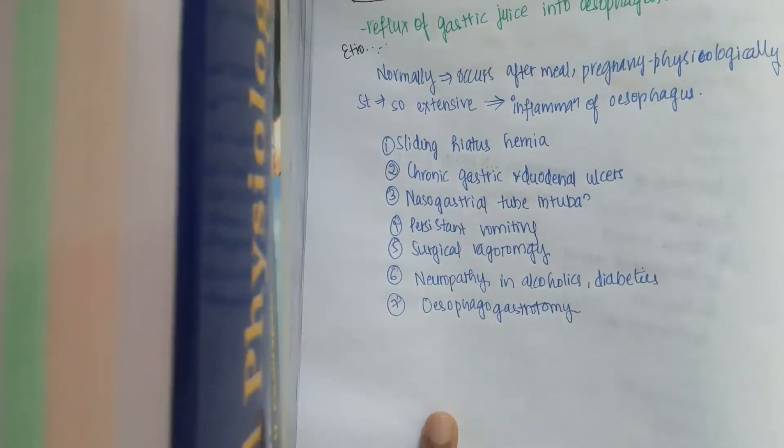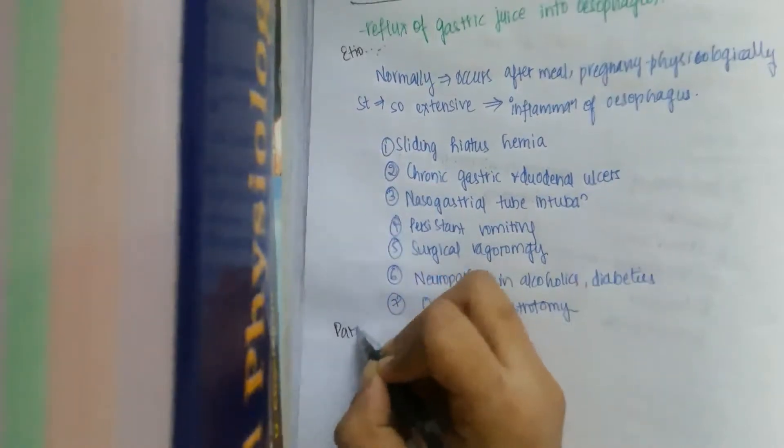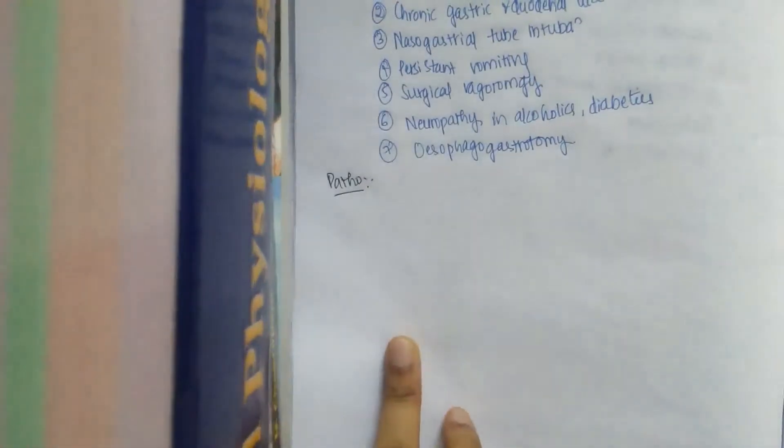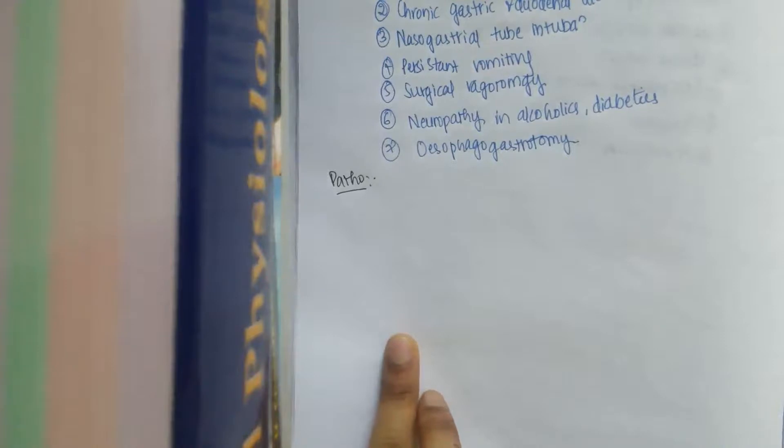In all these conditions there is the chance of this GERD. Coming to the pathogenesis, all these are etiological features. What is the pathogenesis of reflux esophagitis? This is mainly due to the mucosal injury that happens.